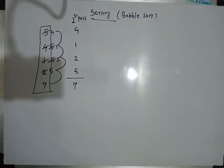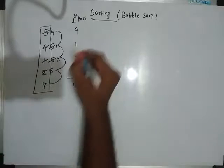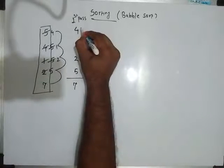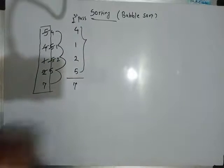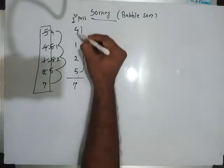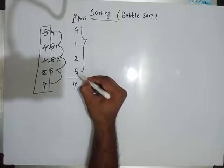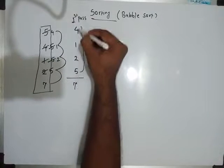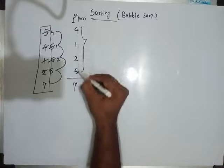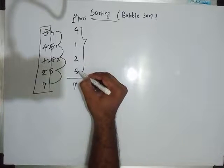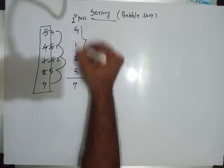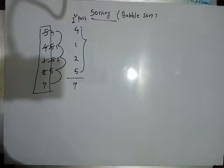In the second pass we find the largest element in the remaining array and push that largest element to the last position of the remaining array. So we must push the largest element of the remaining part to this position. In order to find it, we do the same procedure.